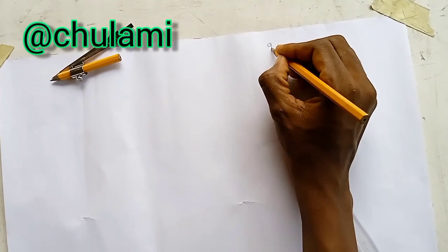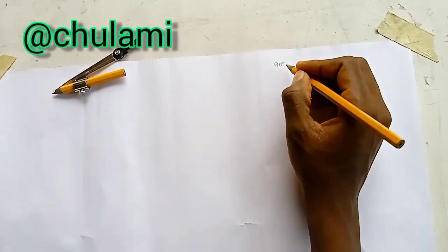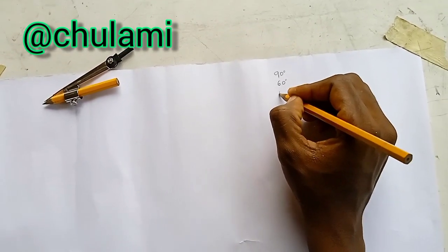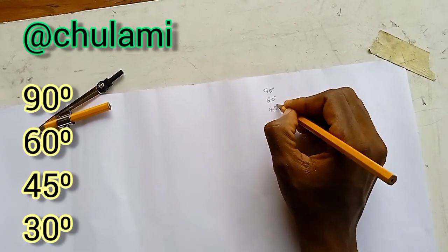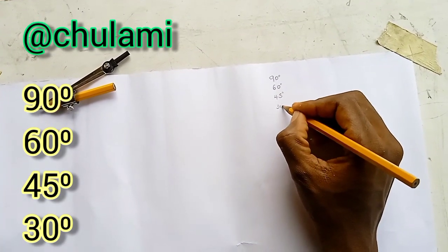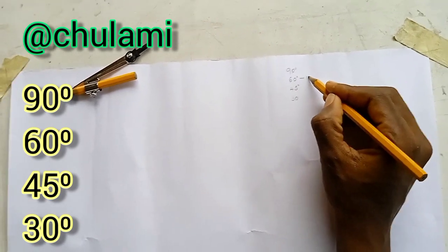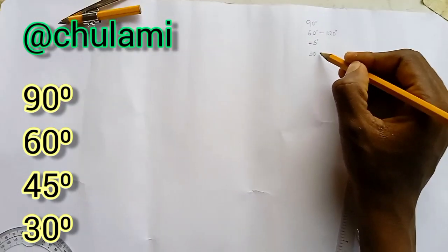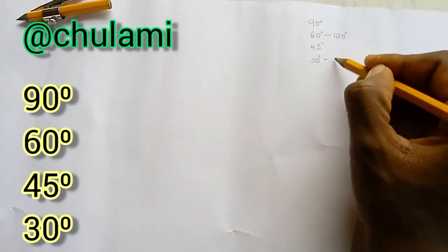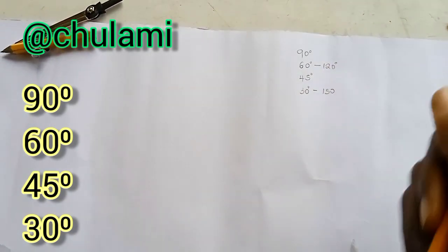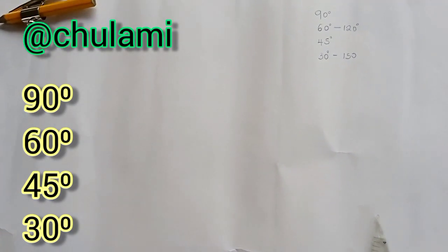Today we'll be drawing angle 90 degree, angle 60, angle 45 and angle 30. As we know, angle 60 is equivalent to angle 120 degree, angle 30 is equivalent to angle 150. So we'll be drawing these 4 basic angles. Let's draw.